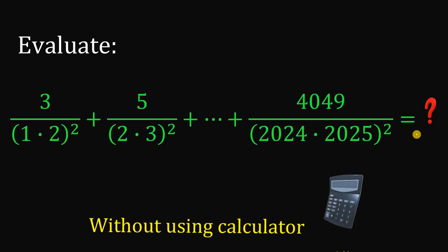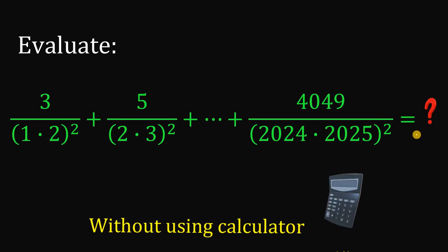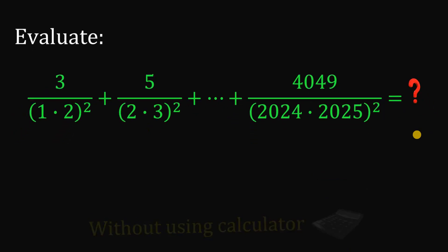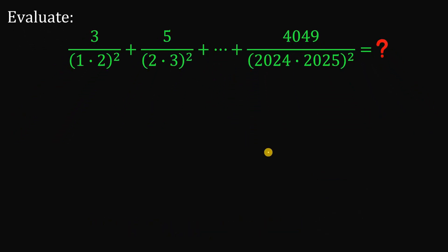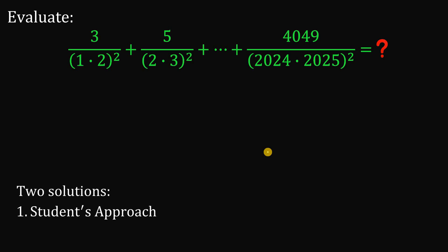Pause this video right now and see if you can answer this question, because I will show you two different solutions. In three, two, one. All right, so to answer this kind of question we will use two different solutions: the first one is the student approach — my approach when I was a student — and the second one is the telescoping sum.